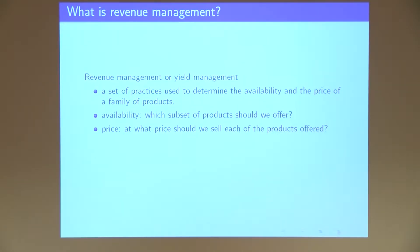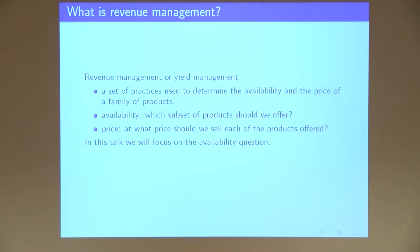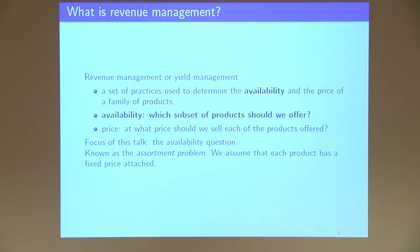So there are two questions here. One is availability: which subset are you going to show to consumers? And the other is: at what price are you going to show to consumers? Assortment planning or assortment optimization focuses only on the first question — which subset of products are going to be shown to consumers.